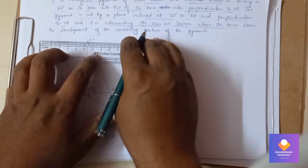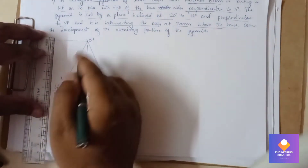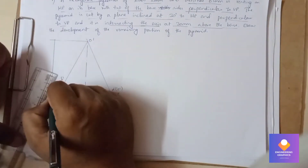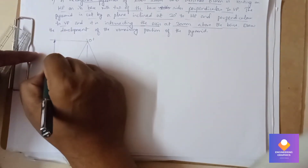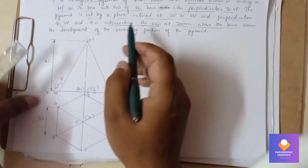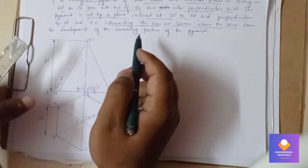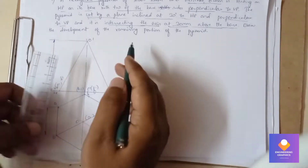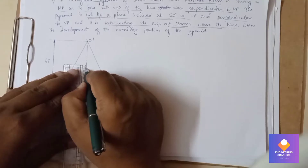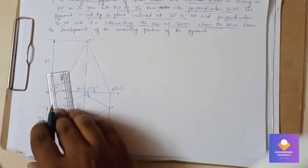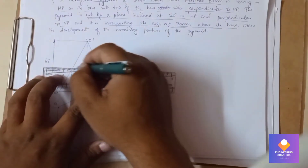The pyramid is cut by a plane inclined at 30 degrees to HP and perpendicular to VP, intersecting the axis at a height of 30mm from the base. So from the base we consider a length of 30mm, take a reference point, and show the dimension for this.